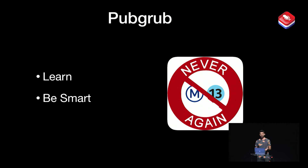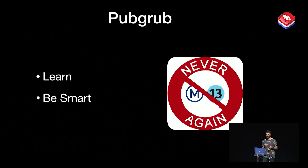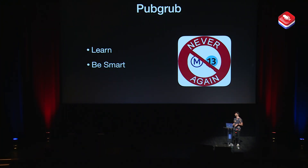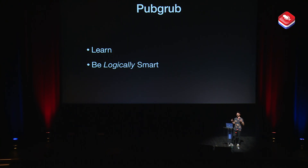I need to explain what I mean by smart. M13 is like no other — as a trivia, M13 was built as a tool to try out different compression algorithms: it takes 2,000 people and compresses them into one single carriage of Metro. Then they pivoted and became a Metro line. Anyway, when I say smart, I mean it's not AI or machine learning smart. It doesn't use blockchain. It's just purely, logically smart.